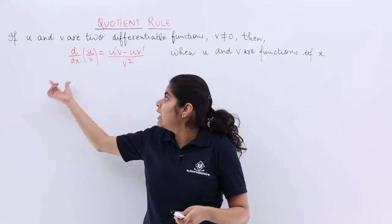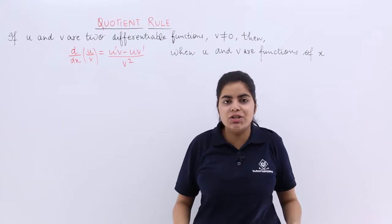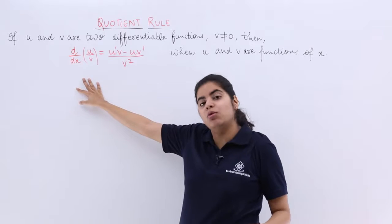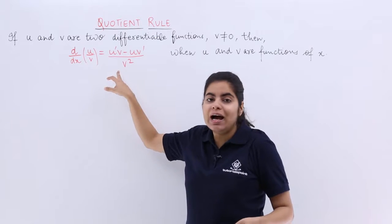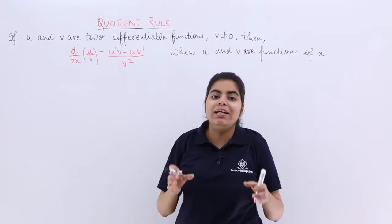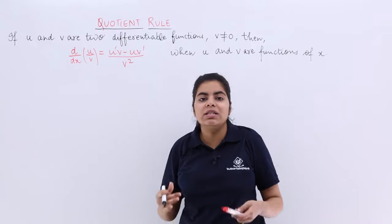Then what happens? Then d by dx of u by v - that means if you have to differentiate u and v with respect to x, how to do it? The formula goes u dash v minus u v dash whole upon v square, and dash represents the differentiation. That means v dash means differentiation of v.